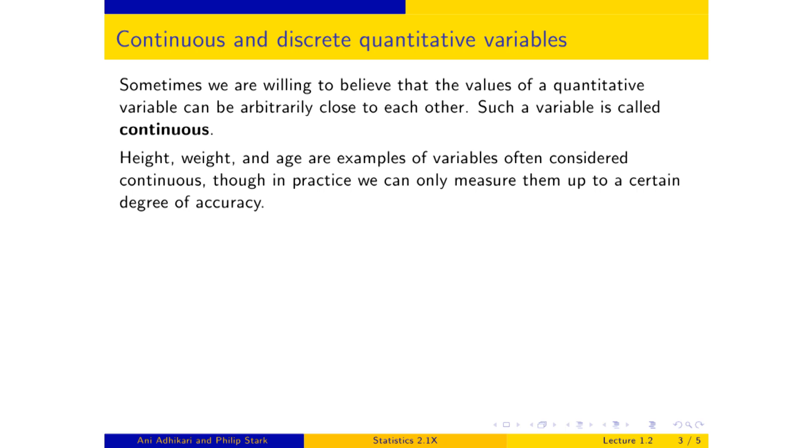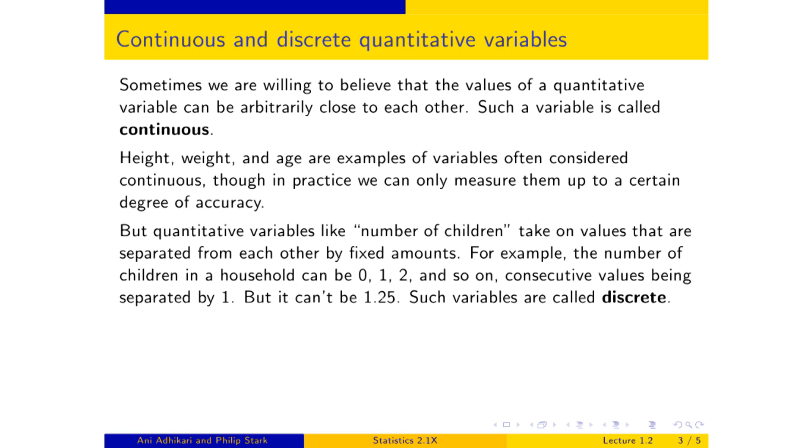And then there are other variables like number of children. Now number of children can be zero, one, two, three. It cannot be one and a quarter. Variables like this, where successive values differ by fixed amounts, are called discrete.